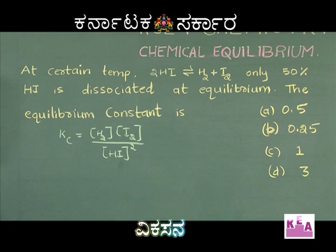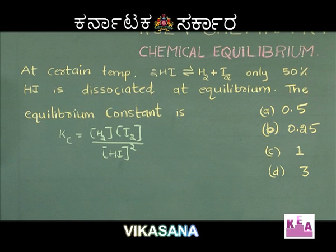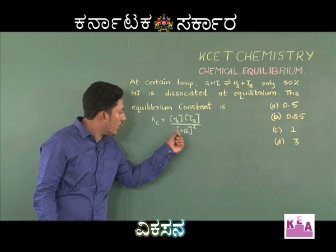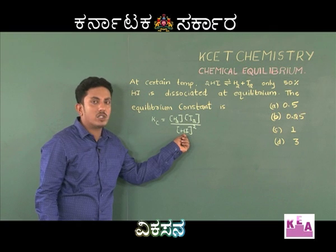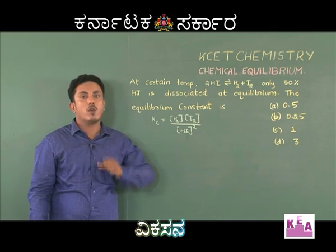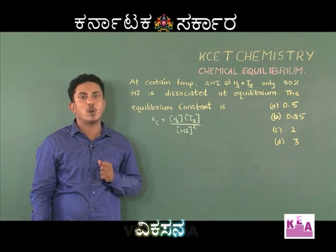Where concentration of H₂, concentration of I₂, and concentration of HI are equilibrium concentrations. Hence, we need to find the equilibrium concentrations and then substitute here.